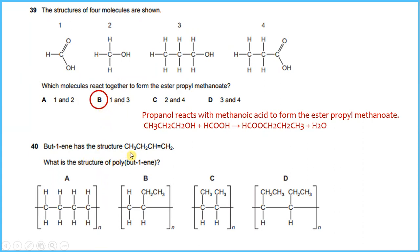Butene has a structure CH3-CH2-CH=CH2. What is the structure of poly butene? These structures, if we translate it, it becomes the answer, which is B.